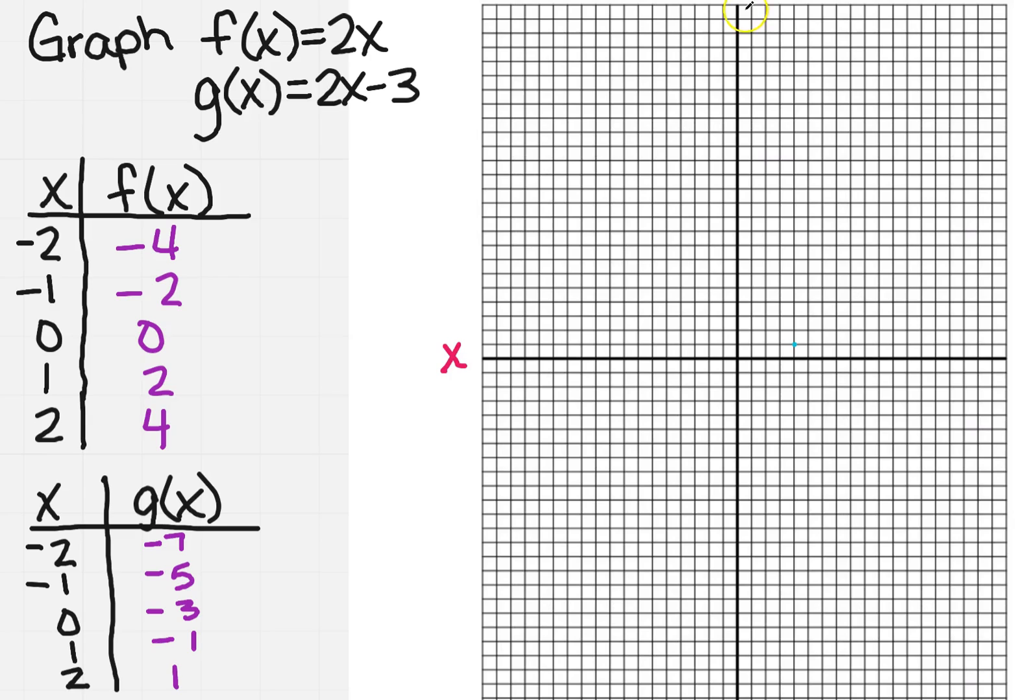Remember, x is the horizontal, y is the vertical. You're going to go in the x first from the origin. So if it's positive, you go to the right. If it's negative, you go to the left. Same thing with y. If it's positive, you go up. If it's negative, you go down.